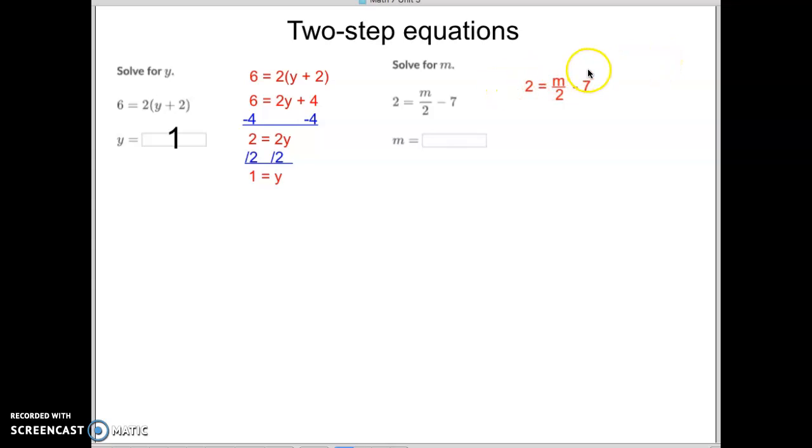Now, first step again, is there anything being added or subtracted to our m? In this case, there is. There's a 7 being subtracted. Well, what would cancel out a negative 7?